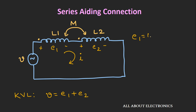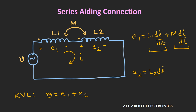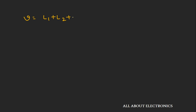Voltage E1 can be given as L1 di/dt plus M di/dt, where the first term represents the self-induced EMF in the first inductor, and the second term represents the voltage generated in the first inductor due to mutual coupling with the second inductor. Since the flux is adding, the polarity of the second term is positive. Similarly, E2 is given as L2 di/dt plus M di/dt. Adding E1 and E2, we get V equal to (L1 plus L2 plus 2M) into di/dt.